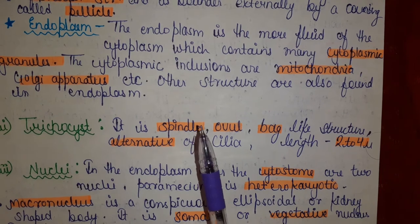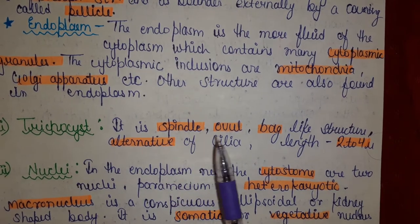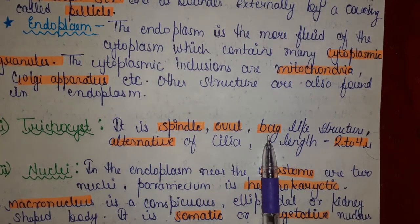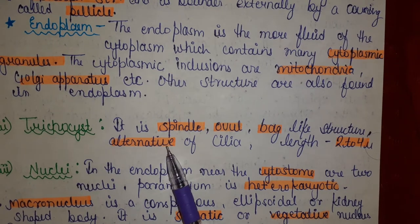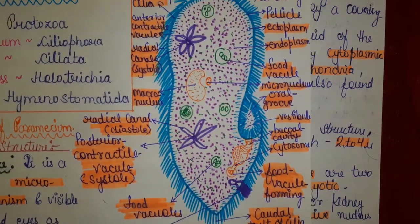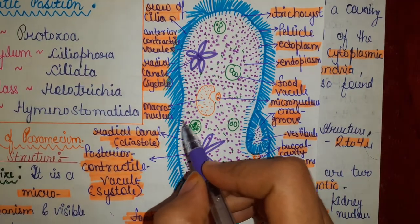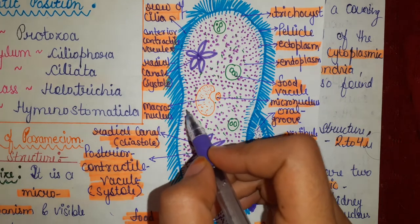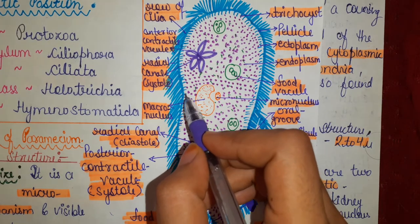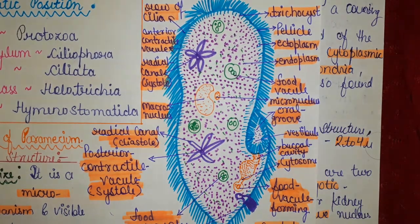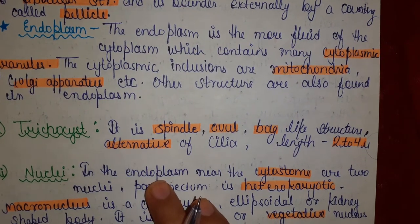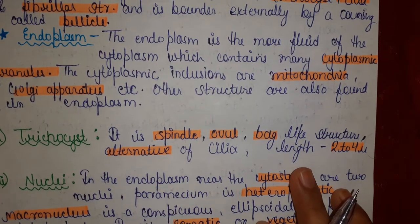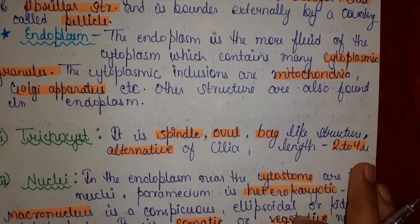Next is our trichocyst. It is a spindle, oval, bag-like structure, alternating with cilia — meaning one trichocyst after one cilium. As you can see in this diagram, the cilia and trichocysts alternate with each other. Its length is 2 to 4 microns.